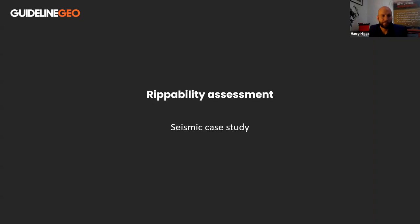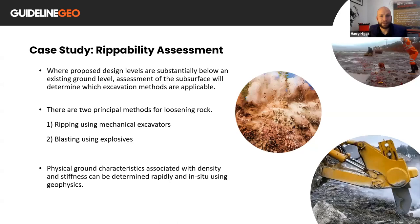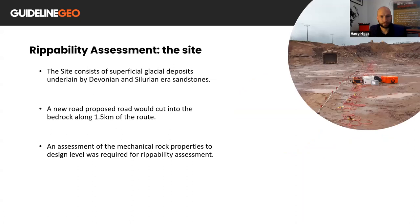Then we have a second short case study. This one was for ripability. So when the ground needs to be excavated to reach a certain design level, if that excavation cuts into the bedrock, then a method of loosening the rock must be considered. Mechanical ripping is suitable for rocks up to a certain strength. However, if the rocks are too hard, then blasting needs to be used. So geophysics is an often used method for determining rock properties quickly and in situ, and it can be useful in the construction planning process to have this information. This particular site consists of superficial glacial deposits underlain by Devonian and Silurian era sandstones. A new road was proposed that would cut into the bedrock along a route of 1.5 kilometers. An assessment of mechanical rock properties to design level was required for an assessment of ripability.